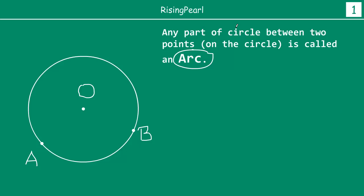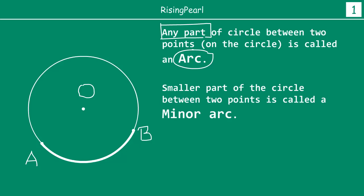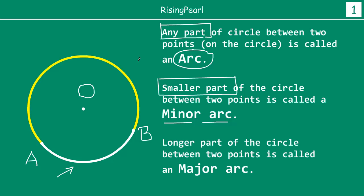Now any part of the circle which is between the two points is called an arc. So as you can see, the smaller part of the circle between the two points, highlighted in bright bold white, is called the minor arc. Why minor? Because it is the smaller portion. So as you can imagine, the other one highlighted in bright yellow, which is the bigger and longer of the two parts, will be called a major arc.